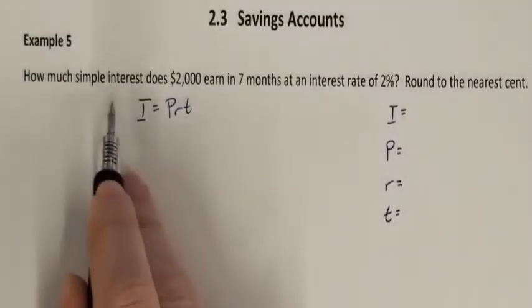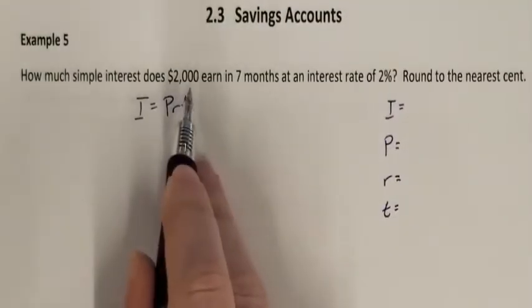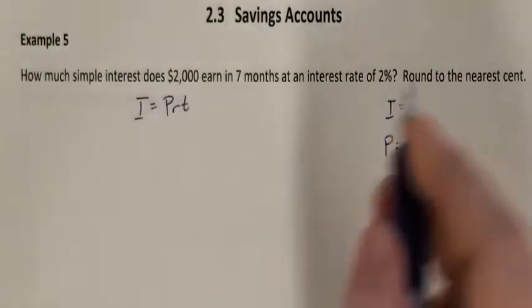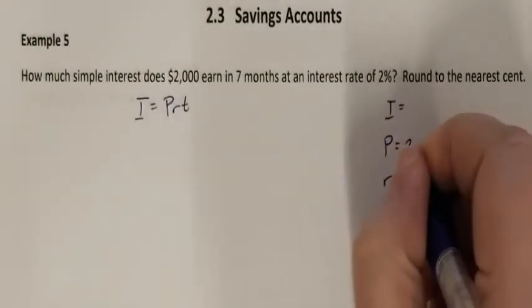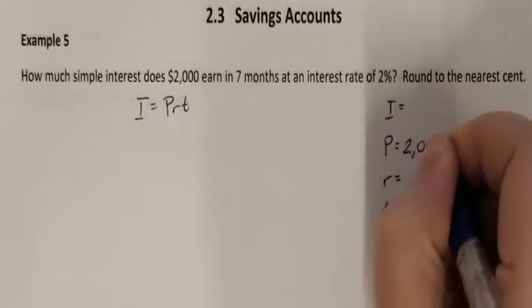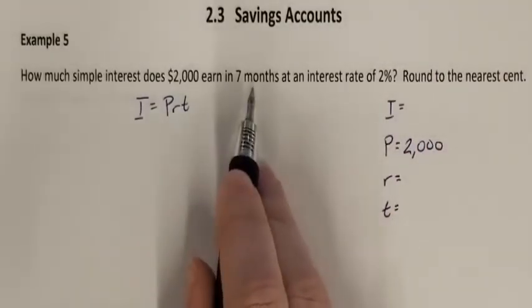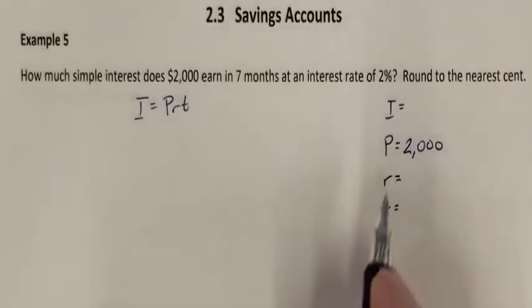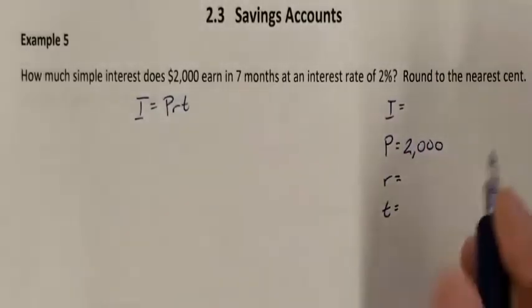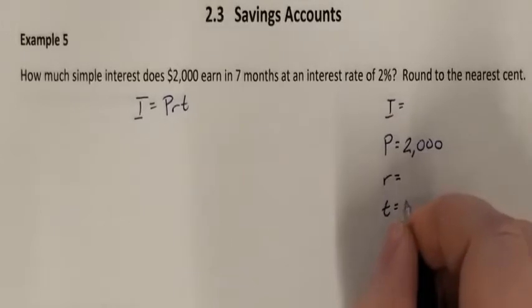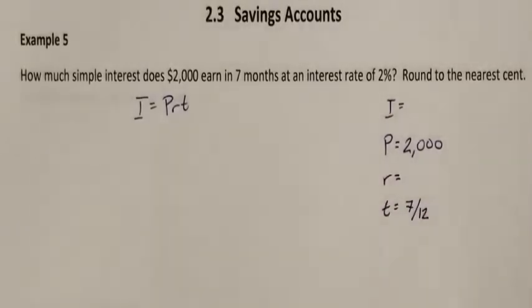How much does $2,000 earn? So that's my principal, $2,000. I have 7 months. Time is in years, so that would be 7 over 12 as my time.